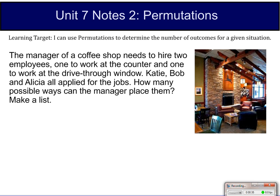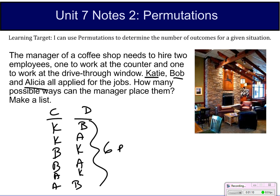He's got Katie, Bob, and Alicia. You've got the counter and you've got the drive-thru. So, how many different possible ways can you do it? Well, Katie and Bob, then you can go Katie and Alicia. You can go Bob and Katie, Bob and Alicia, and you can go Alicia and Katie and Alicia and Bob. So, you've got a grand total of six possibilities for three people to fill two positions.